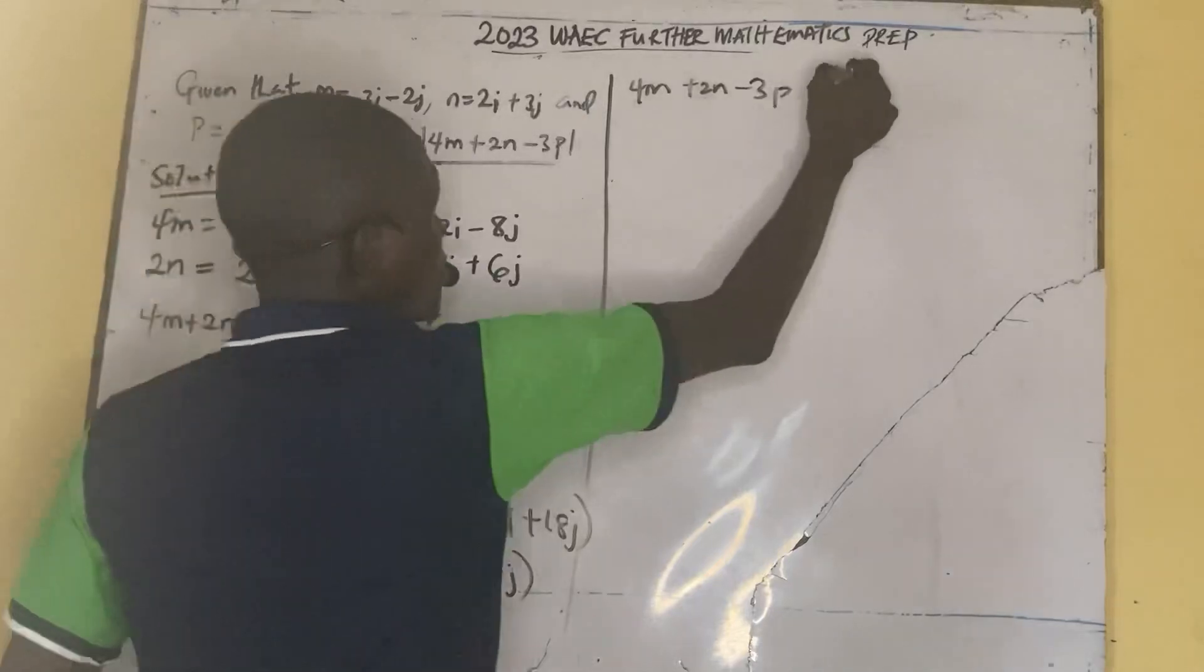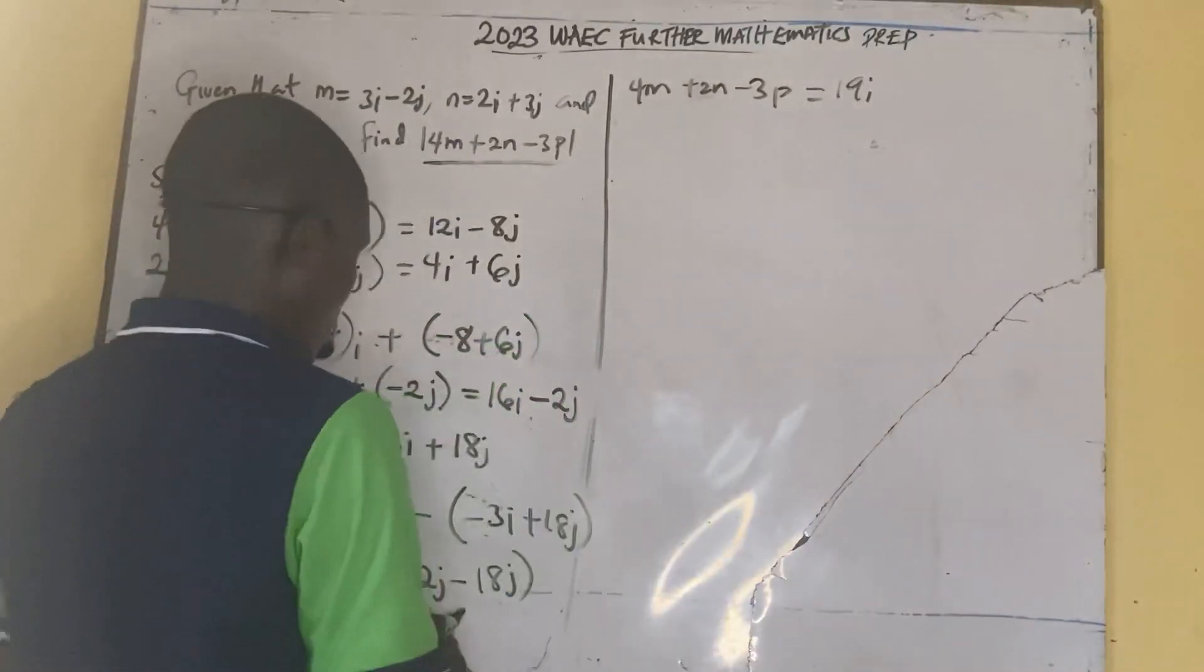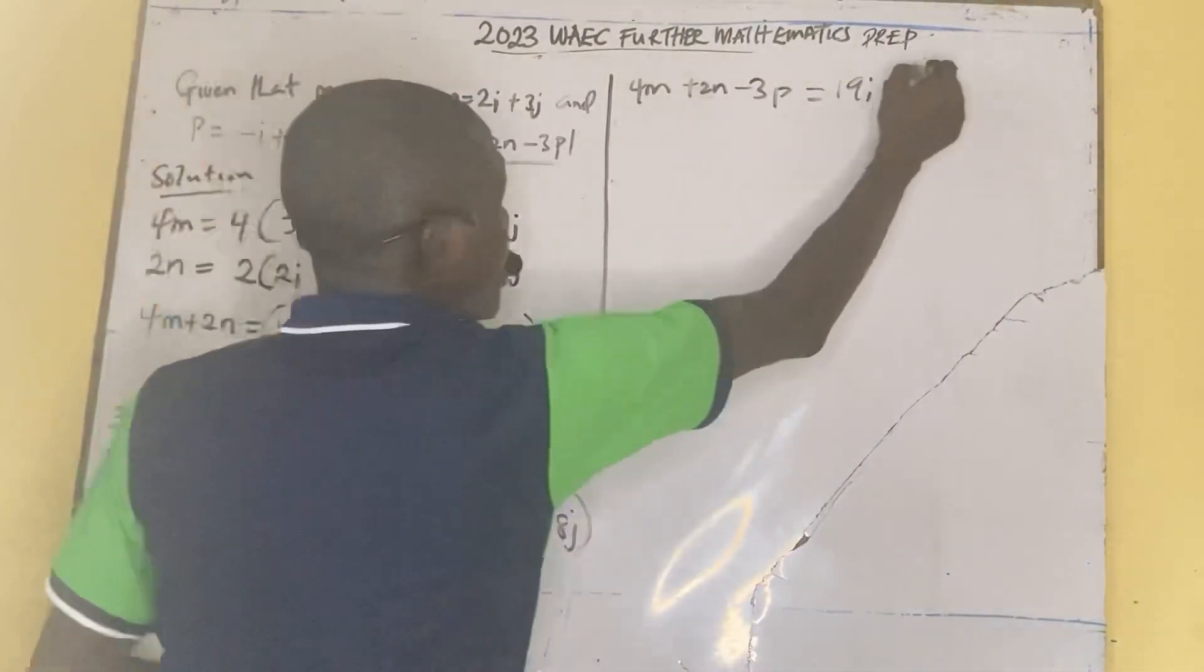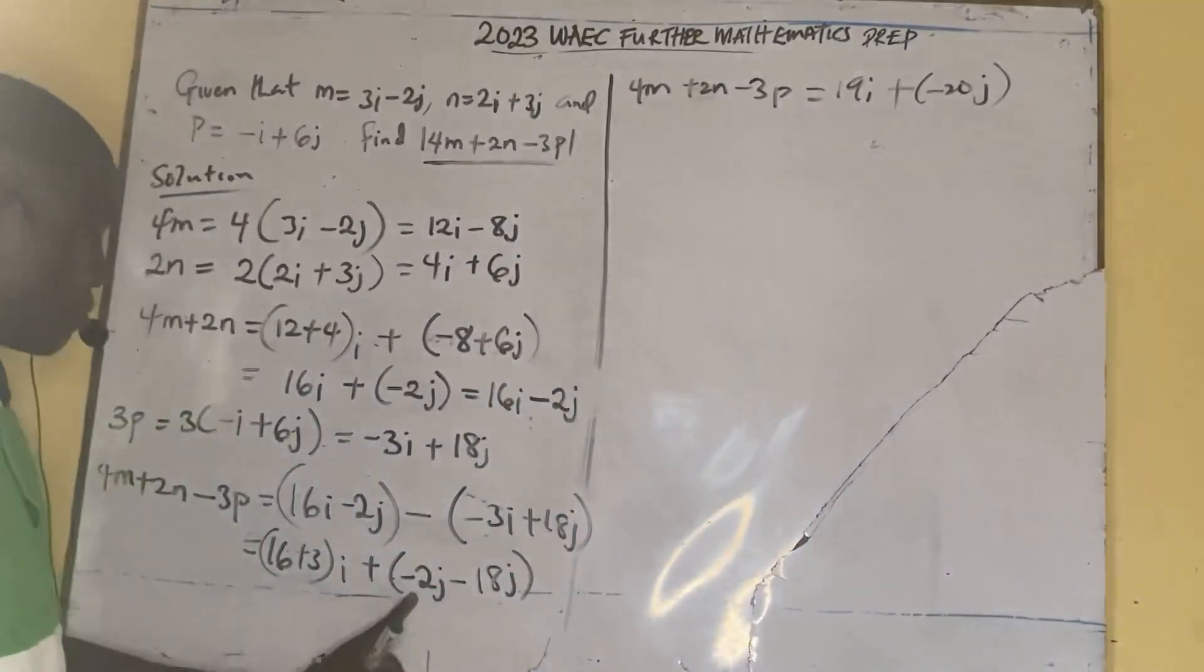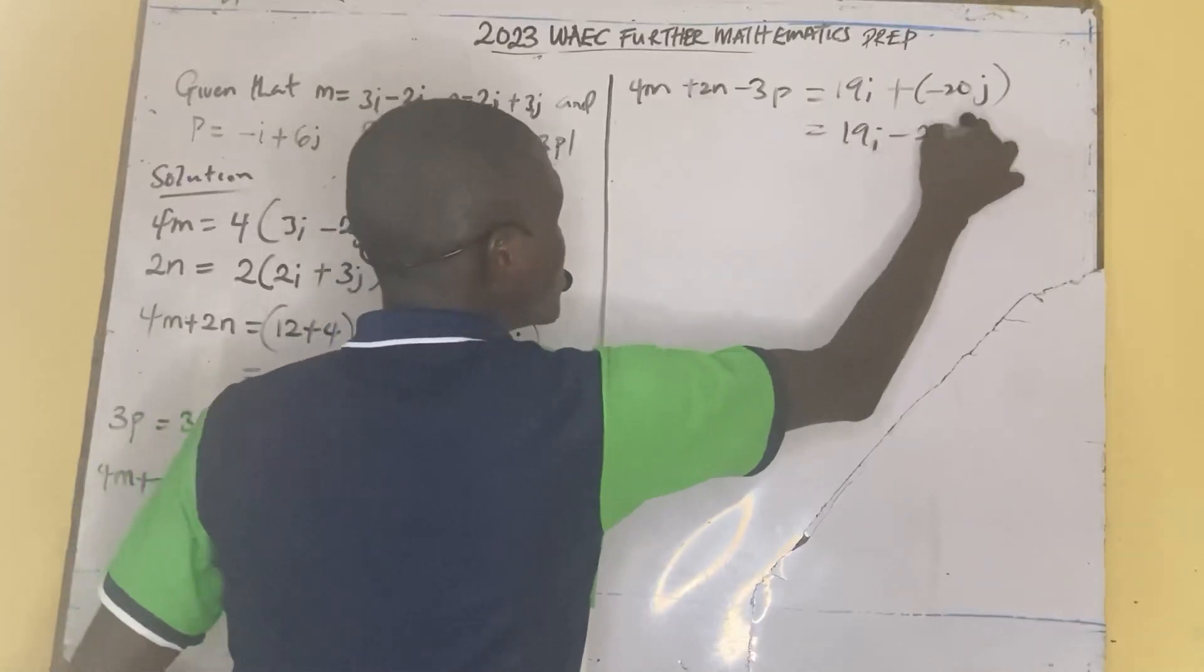16 plus 3 will be 19i. 19i plus what? Minus 2 minus 18 is minus 20j. Minus 20j.